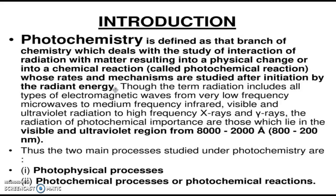Light consists of packets of energy called photons. This study of chemistry is called photochemistry. Though the term radiation includes all types of electromagnetic waves, the radiation of photochemical importance are those which lie in the visible and ultraviolet region. So photochemistry deals with the visible and ultraviolet region whose range is 8000 to 2000 angstrom, or in terms of nanometers 800 to 200 nm — that is 200 to 400 nm for ultraviolet and 400 to 800 nm for the visible region.